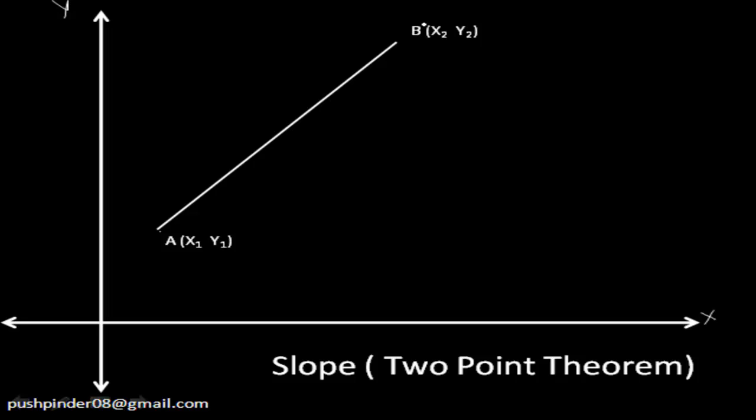This point here is (x1, y1) and this point here is (x2, y2). For viewers who haven't watched video 1, let me define what slope means. If I rewind the line back to the x-axis and calculate the angle made by the line and the x-axis, the tangent of that angle equals the slope.